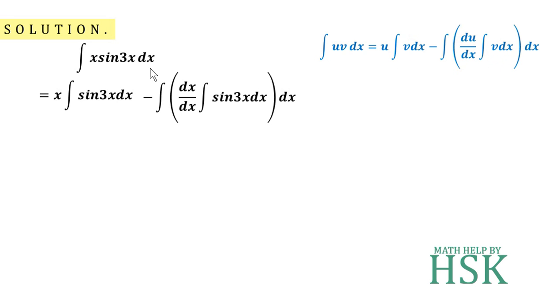When we assume x as the first function, x on differentiation gives a constant term, and sin(3x) on integration gives -1/3 cos(3x). This gives an easier term, and the integration will solve more easily.